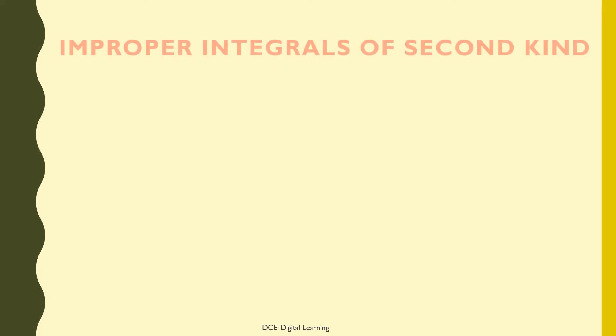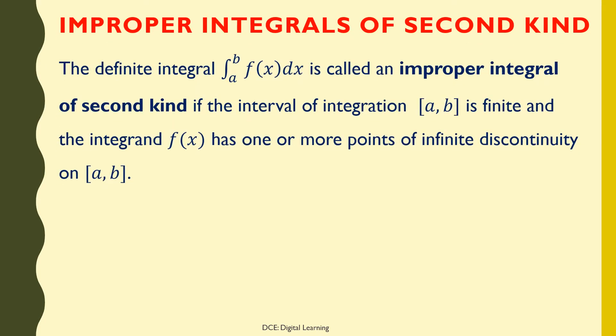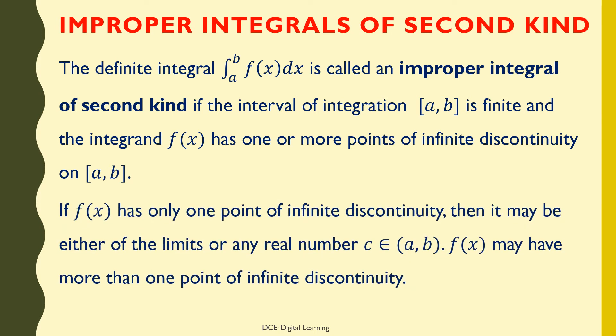Improper Integrals of Second Kind. The definite integral of f dx from a to b is called an improper integral of second kind if the interval of integration [a,b] is finite and the integrand f(x) has one or more points of infinite discontinuity on [a,b]. If f(x) has only one point of infinite discontinuity, it may be either of the limits or any real number c in the open interval (a,b). f(x) may also have more than one point of infinite discontinuity.